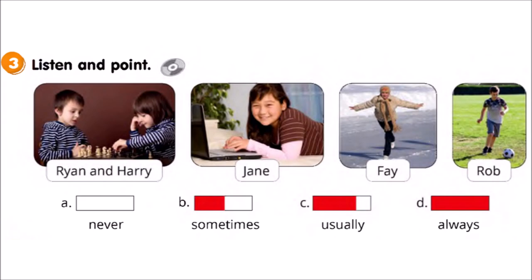Three. Hey, Justine. Where's Faye? Hmm. What's the time? It's half past four. Why? Faye always ice skates at half past four. We can go watch her ice skate. That's a great idea.